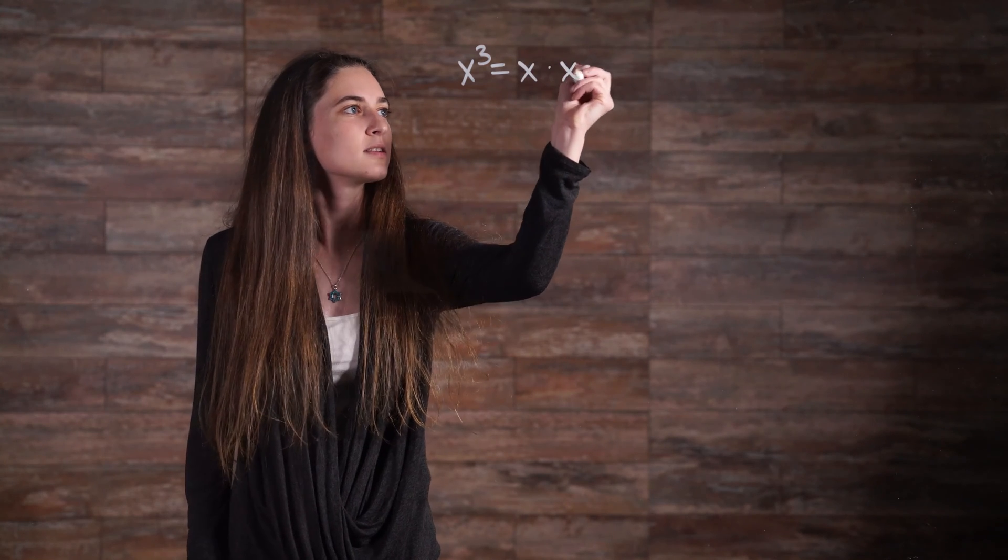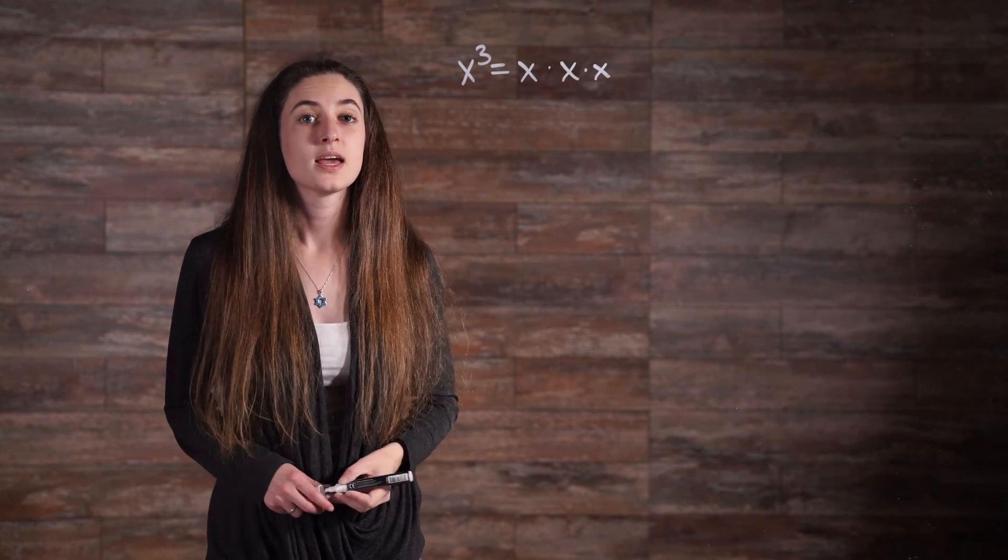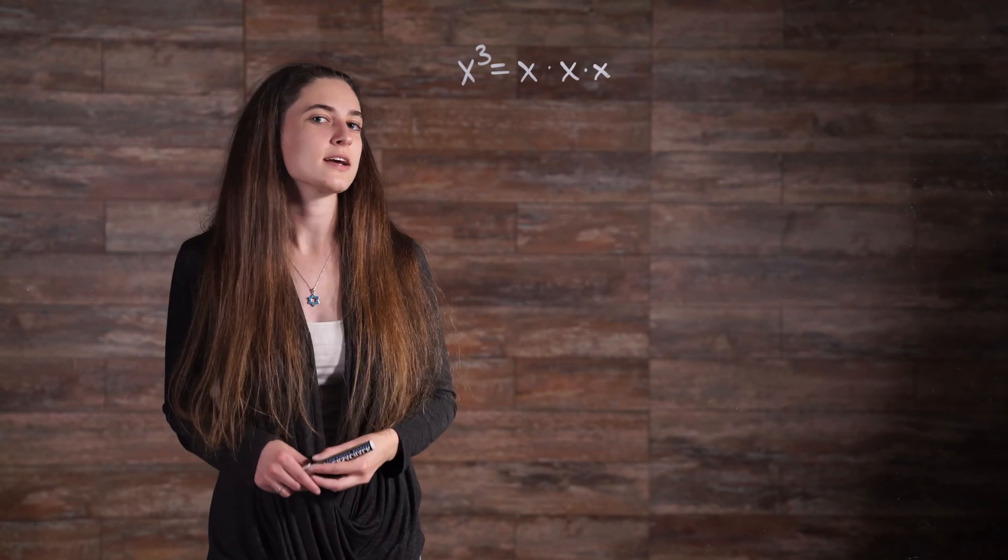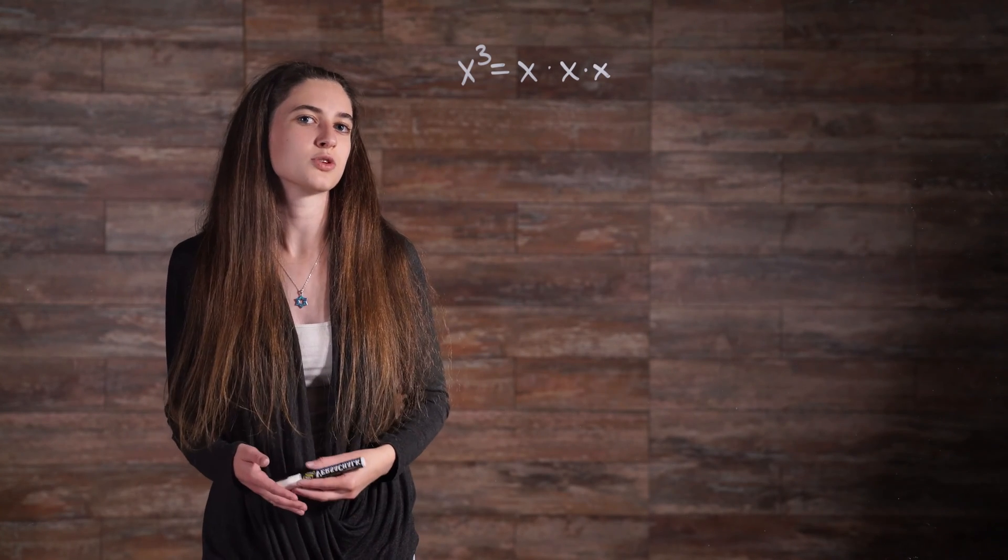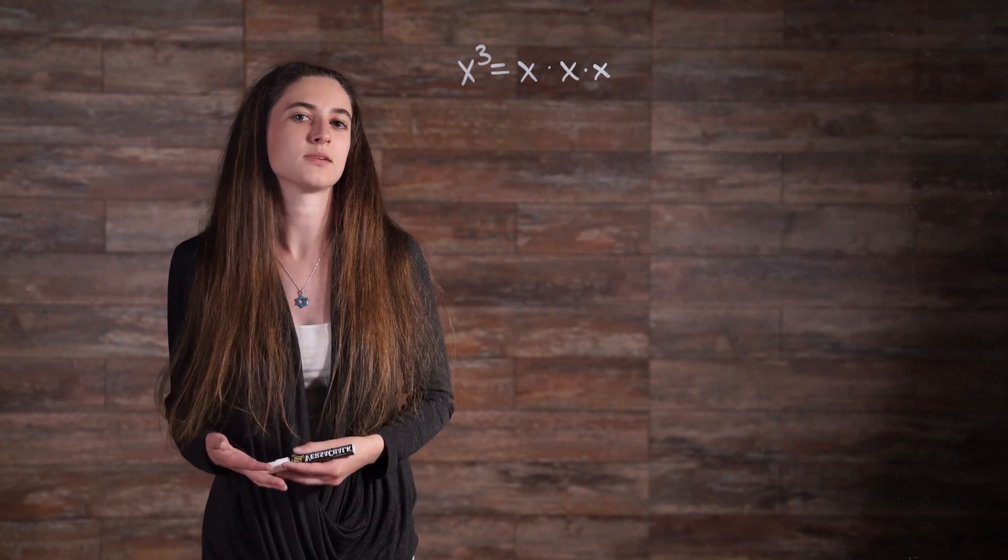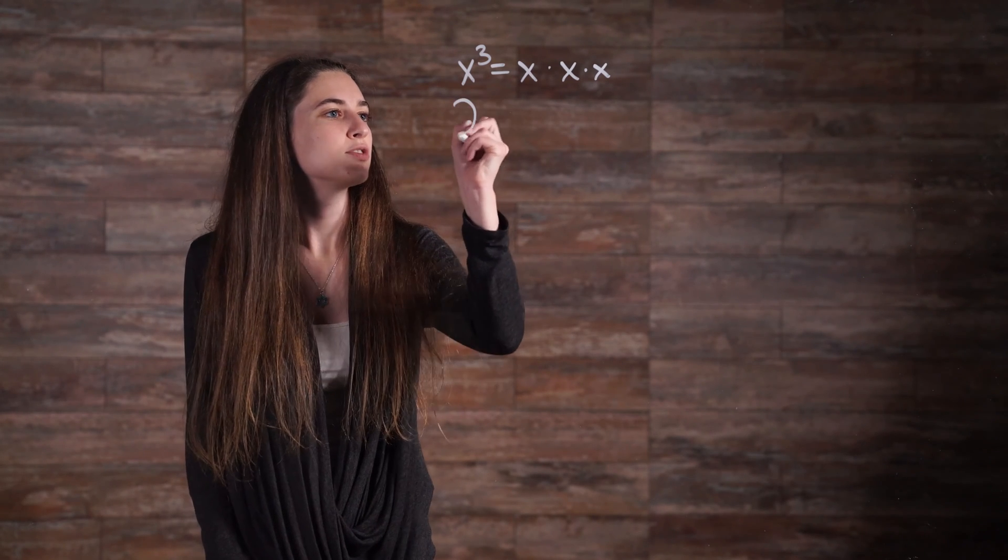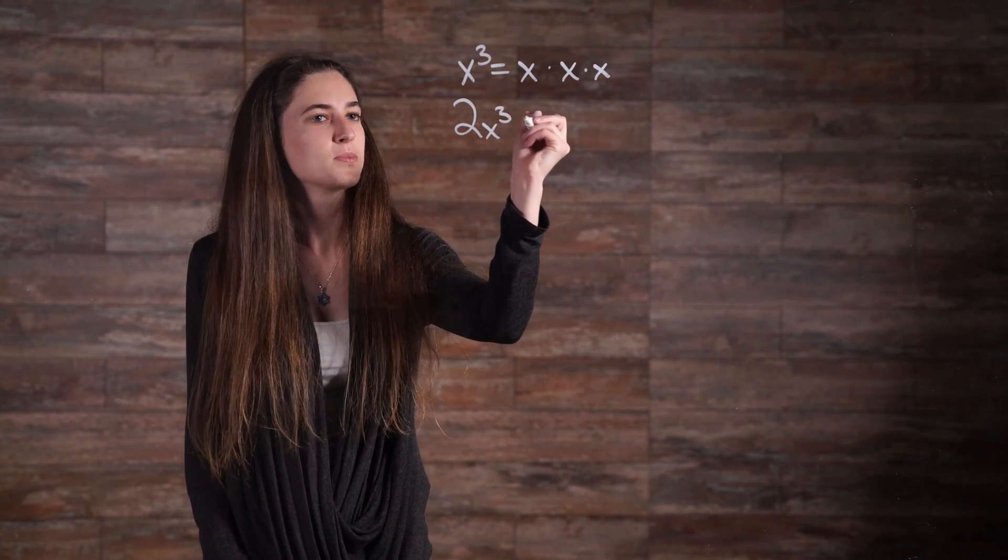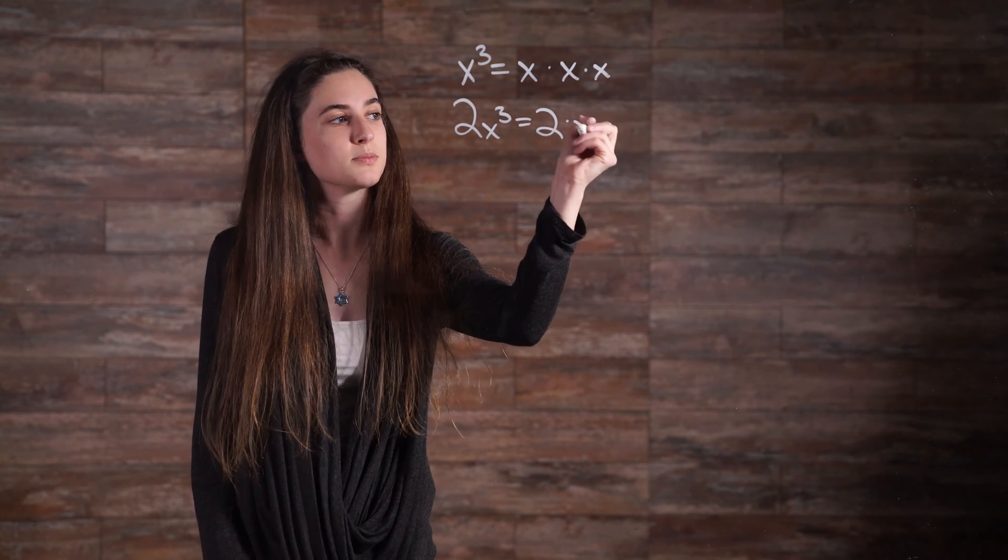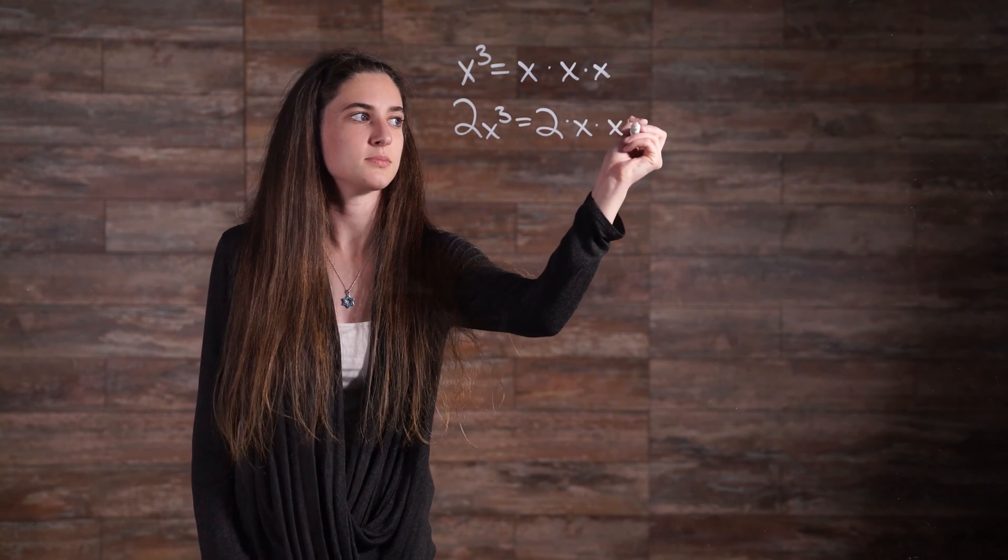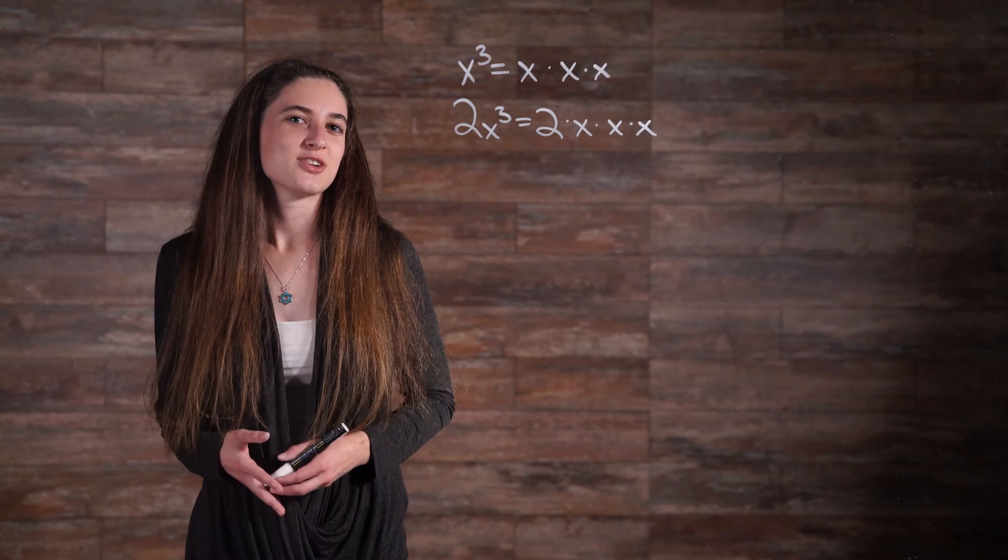x cubed is equal to x times x times x. As you can see, the notation x cubed is a more efficient way to write the expanded version of x times x times x. 2x cubed is equal to 2 times x times x times x. Notice that the base here is x.